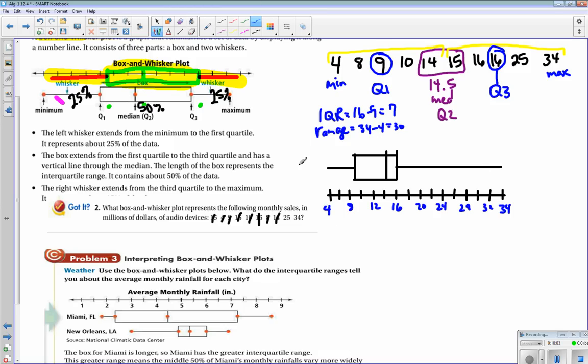Alright, so let's write on here the important numbers. That's 4, this is 9, this is 14.5, this is 16, and this is 34.